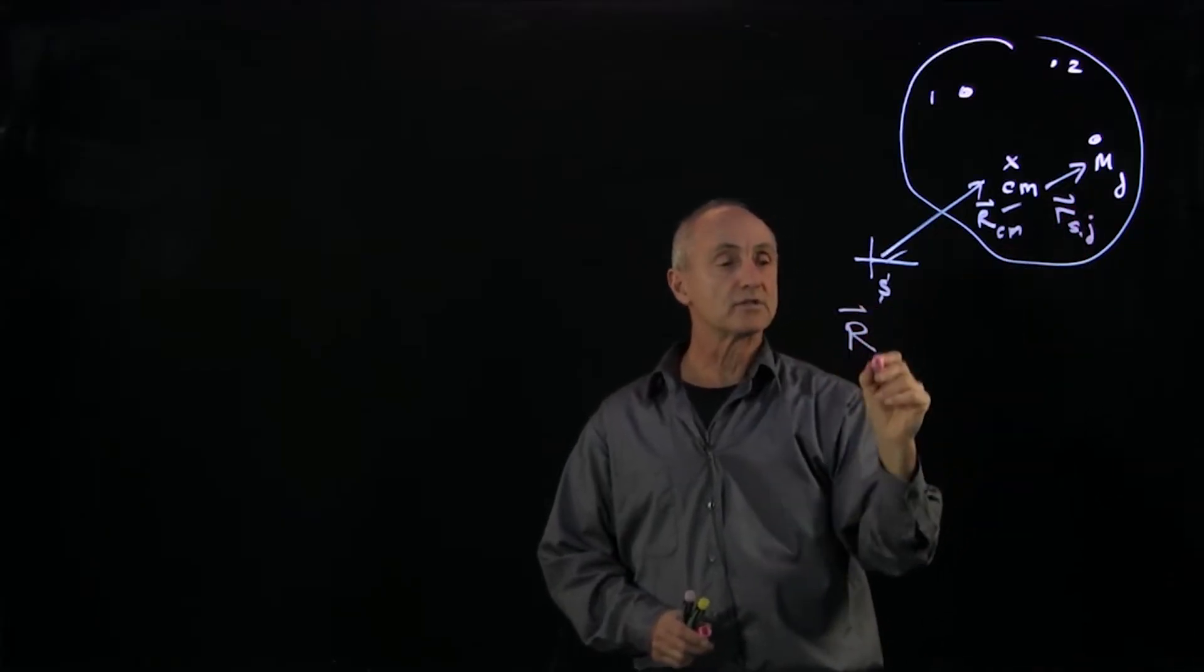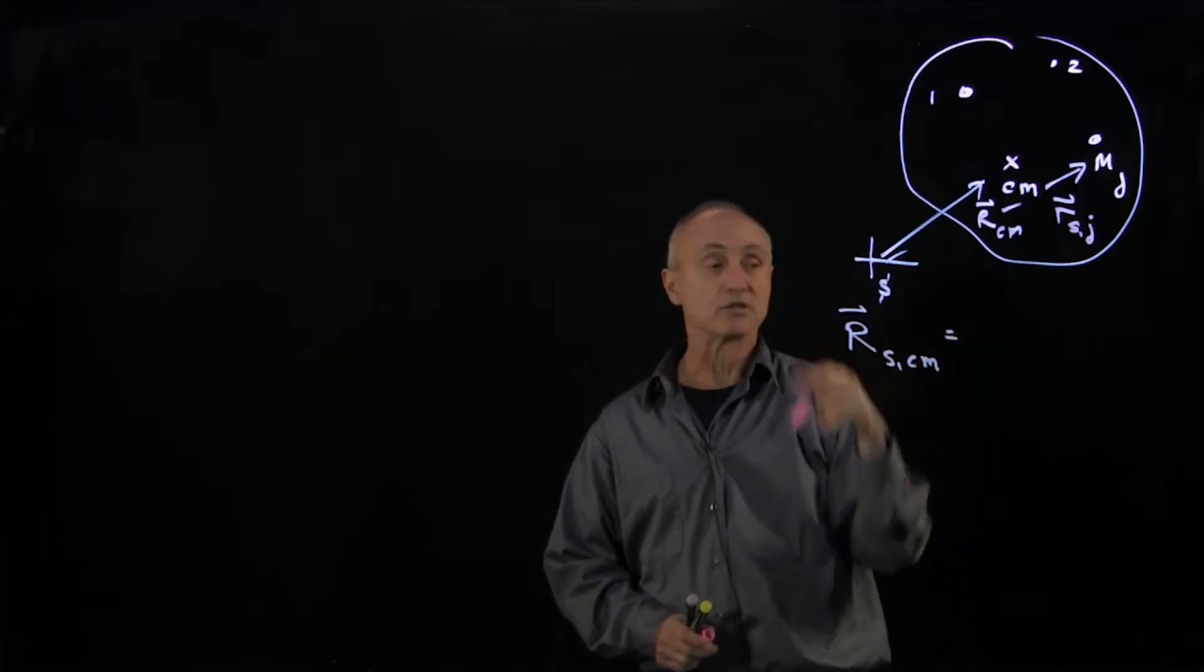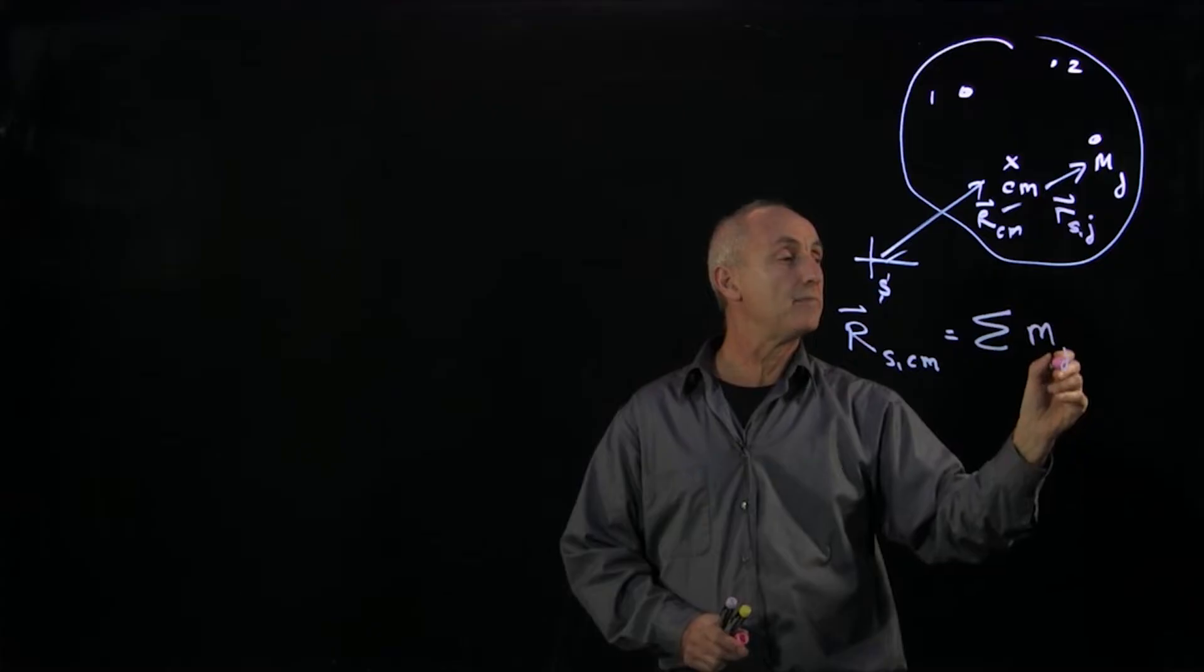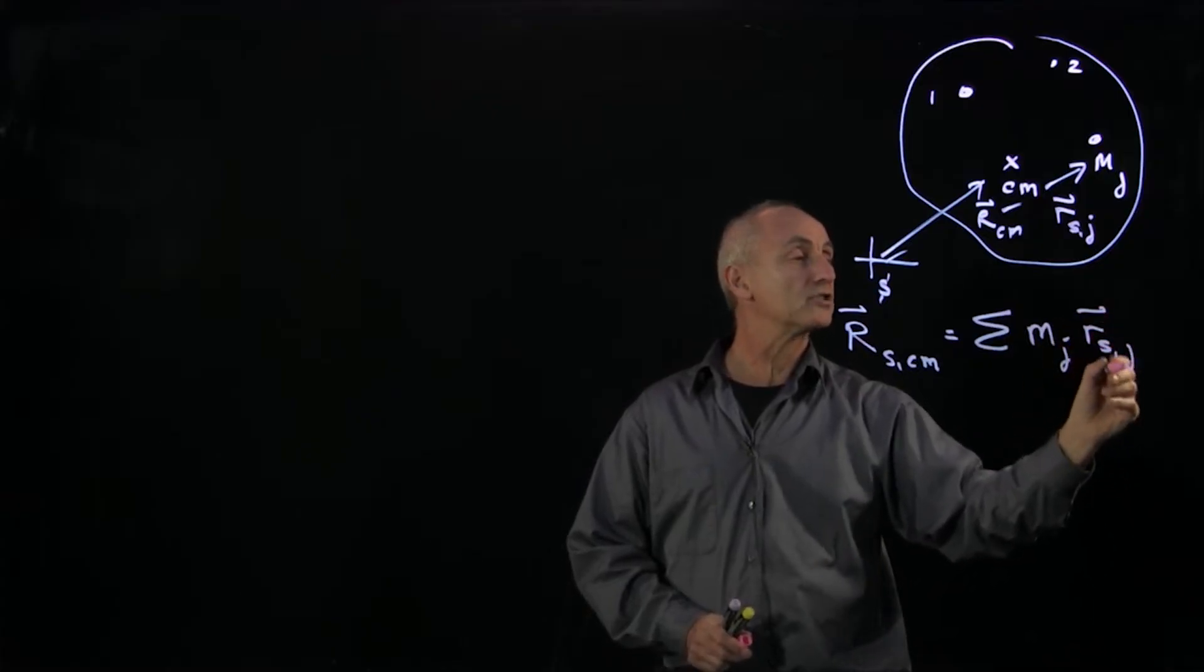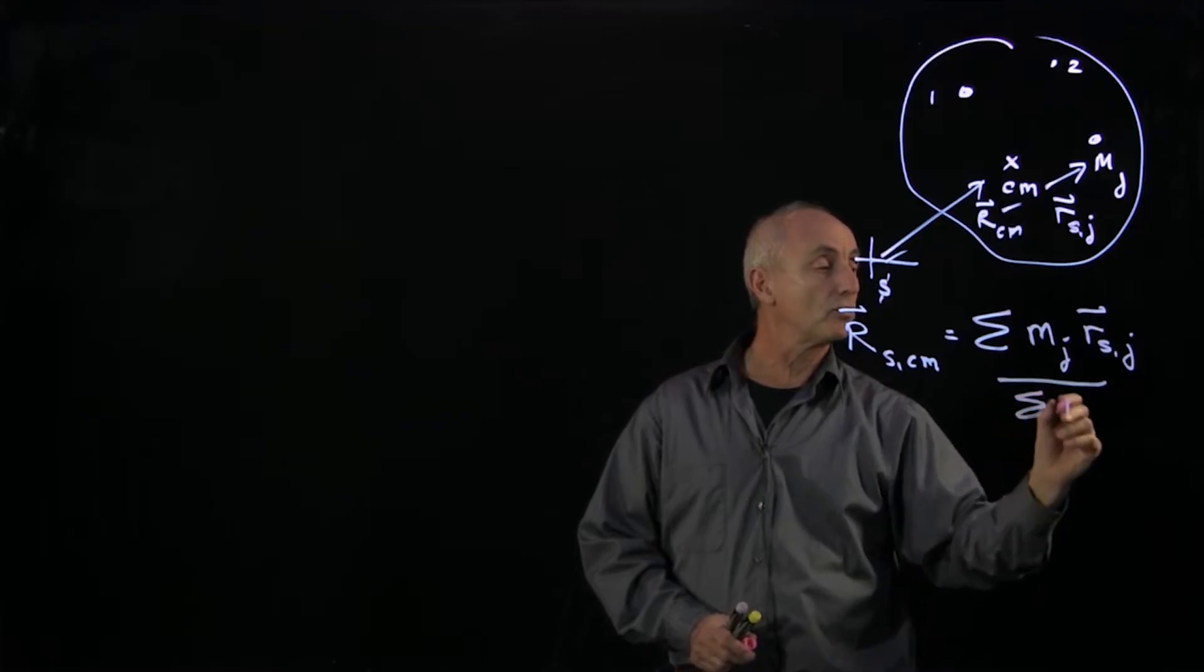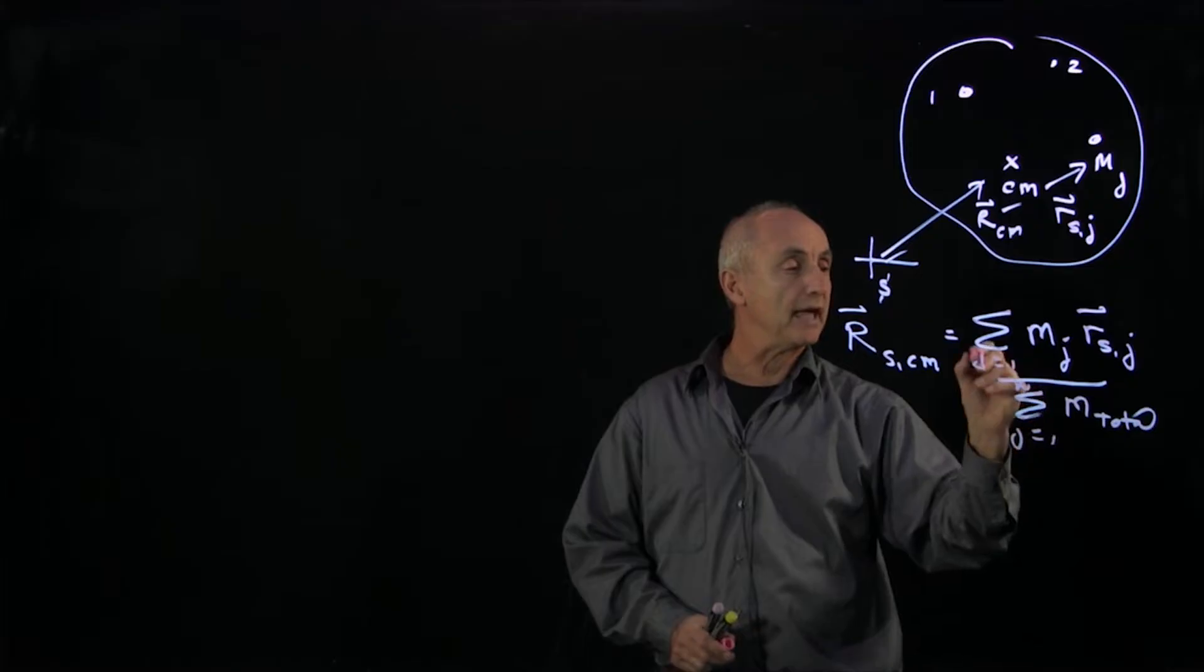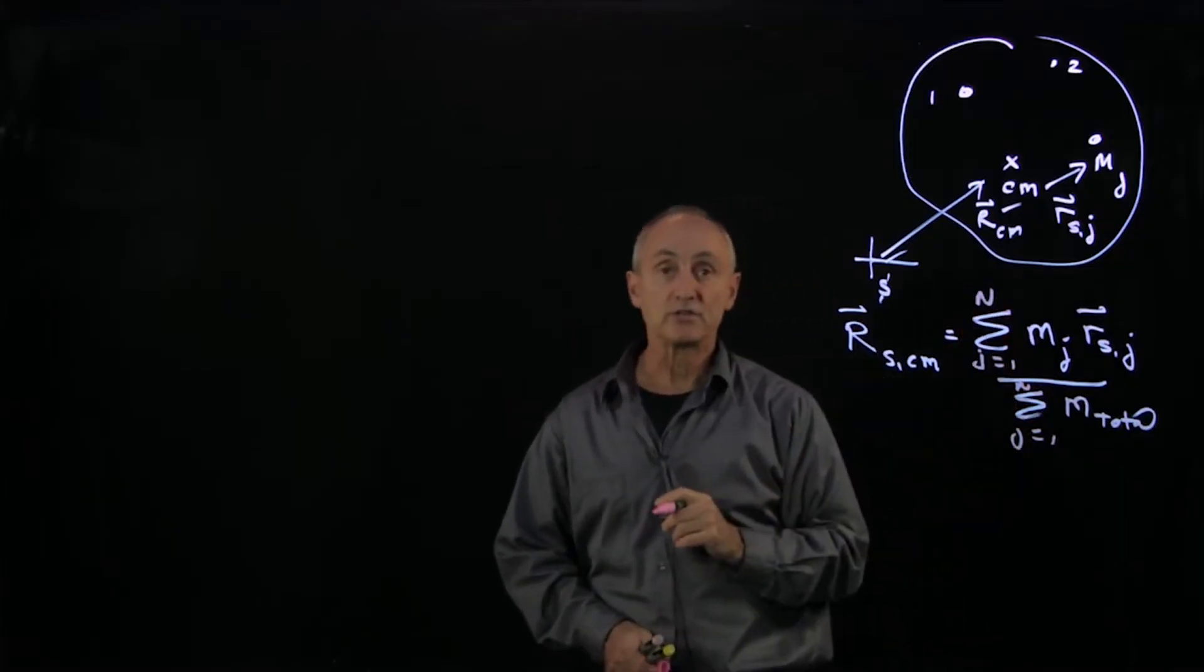And we saw that this velocity, the position of the center of mass with respect to this origin s, is the sum m_j r_sj. And that's divided by the total mass, m total. And j goes from 1 to n, where n is the number of particles in the system.